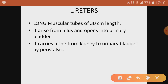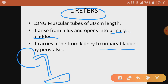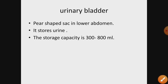The ureters are long muscular tubes, about 30 centimeters in length, that arise from the hilus and open into the muscular sac-like structure called the urinary bladder. Their function is to carry urine from the kidney to the urinary bladder. Urine moves down with the help of peristalsis — the regular contraction and relaxation of muscles — a term you learned in the human digestive system.